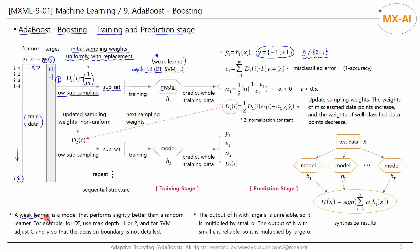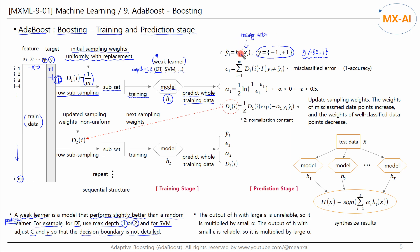A weak learner is a model that performs slightly better than a random prediction. For decision trees, make max depth as shallow as 1 or 2. For support vector machines, adjust the C and gamma values to ensure the decision boundary is not too detailed. We use this subset to train the model. H1 is the model created and trained in the first iteration round. We then use the trained H1 model to predict the class of the entire training data. When training data is input to H1, the predicted class Ŷ is output.